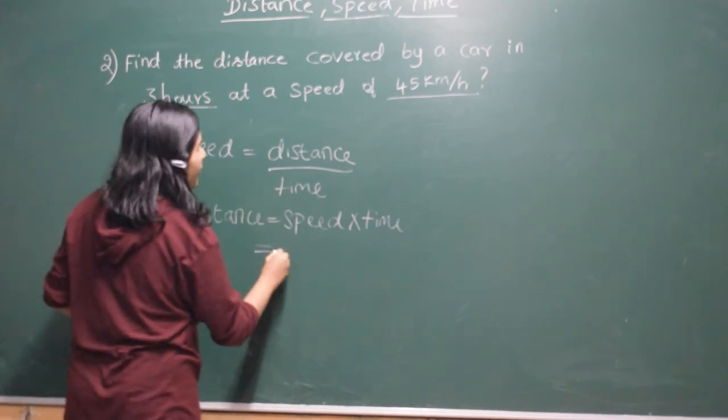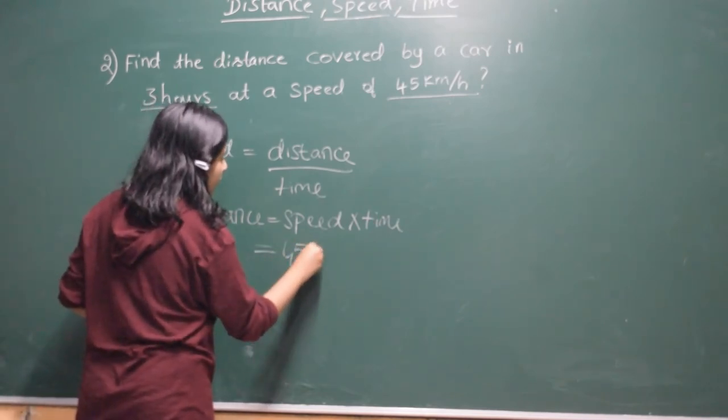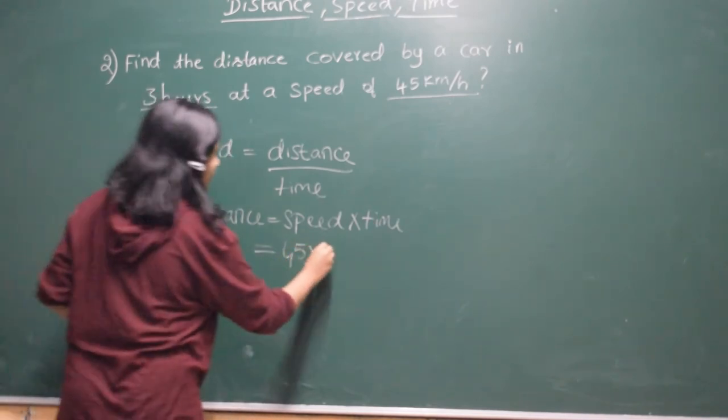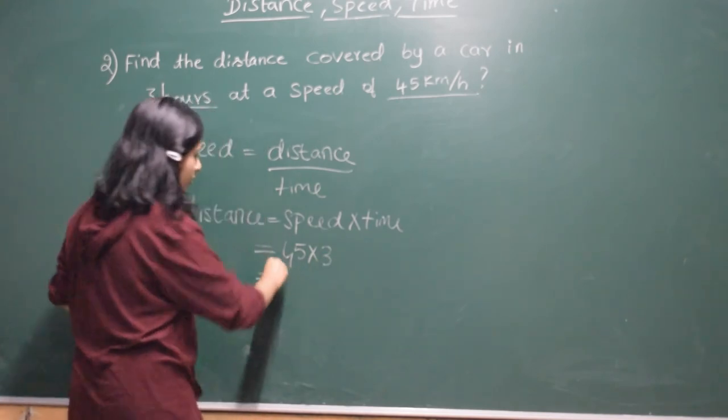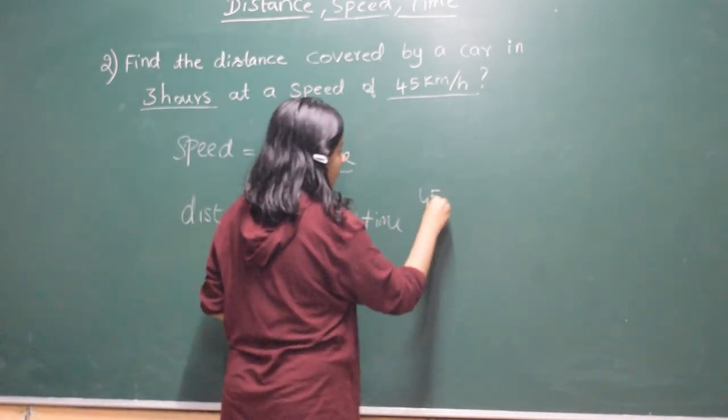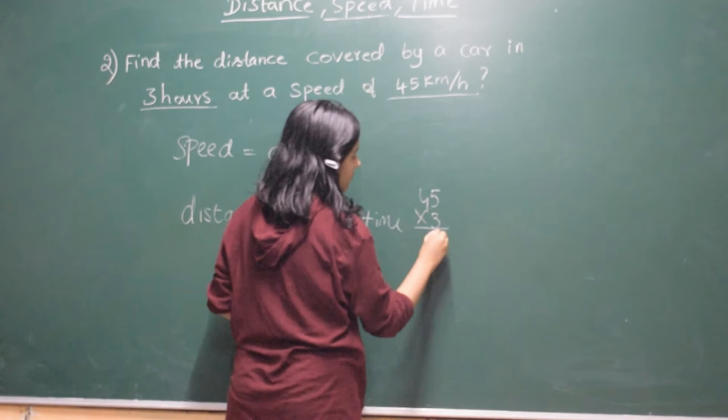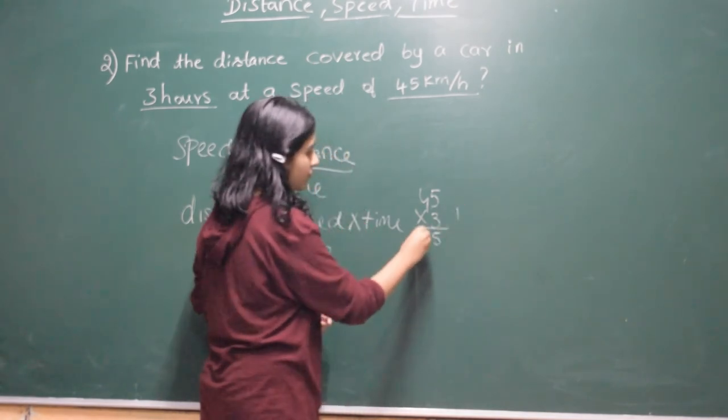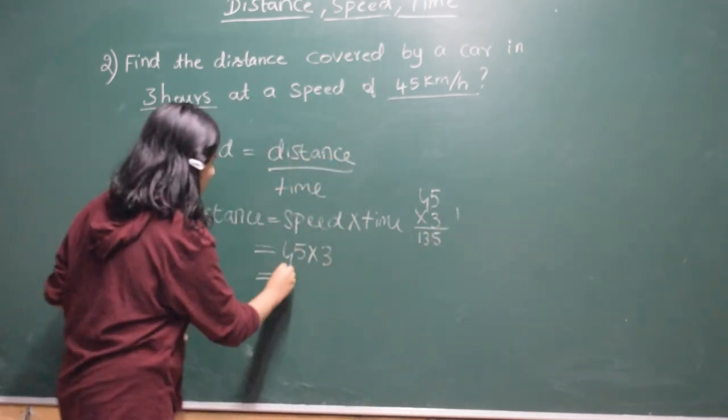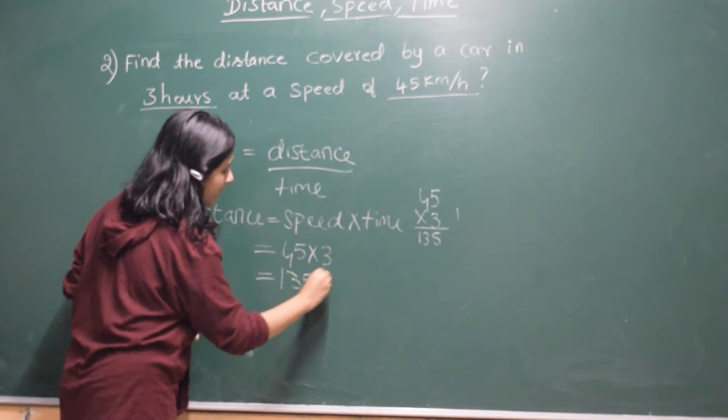So now we know the speed, that is 45, into time, that is 3 hours. So we will get 135 km.